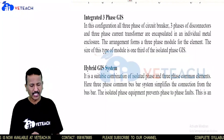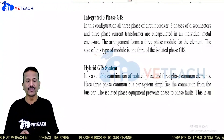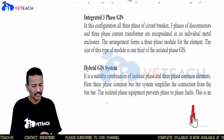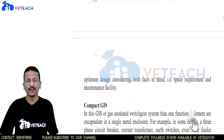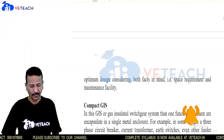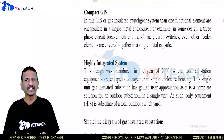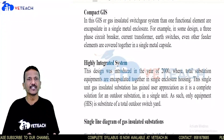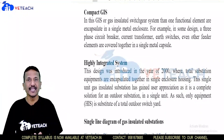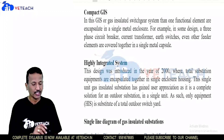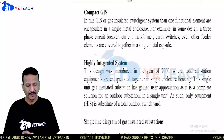The hybrid GIS is a suitable combination of isolated phase and three-phase common elements. Three-phase common bus bars simplify the connections. The isolated phase arrangement prevents phase-to-phase faults. The fourth type is compact GIS, and the fifth is the highly integrated system.